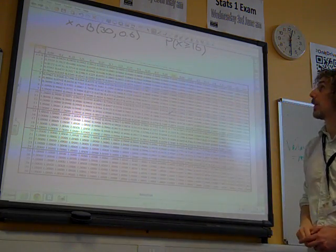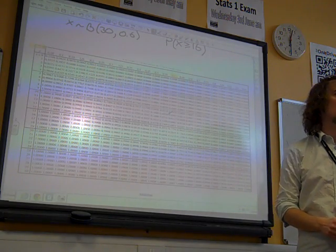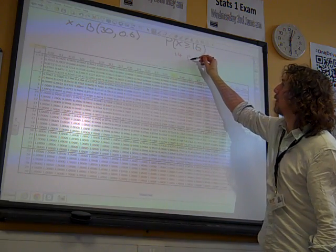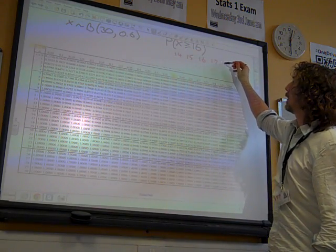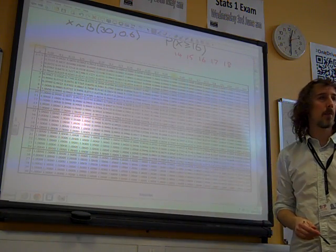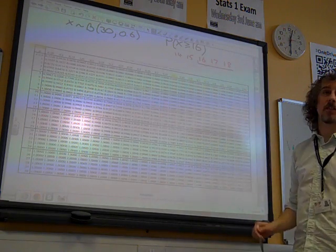And the question says, find the probability of x being greater than or equal to 16. Think about what this means. That's the number of successes. So our successes could be any number from 0 up to 30, couldn't they? But we're interested in x greater than or equal to 16.